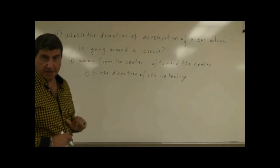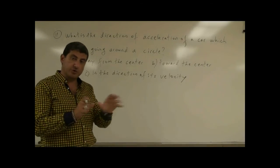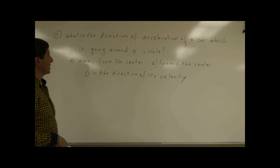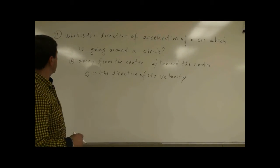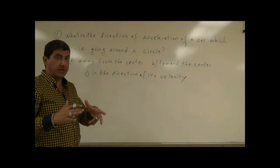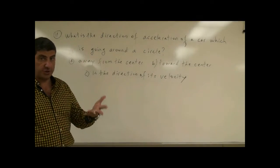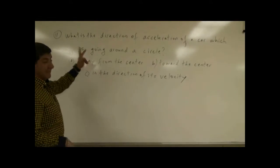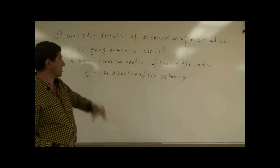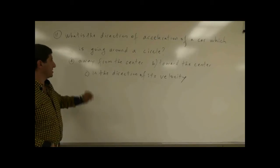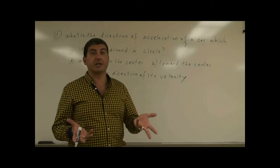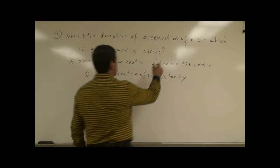We now do another question. This one is a follow-up to question number two about acceleration. It says: what is the direction of acceleration of a car which is going around a circle? We already mentioned that if a car is making a sharp turn its acceleration is greater. So now what is the direction of that acceleration? Option A says away from the center, B says toward the center, C says in the direction of its velocity. The answer is towards the center.